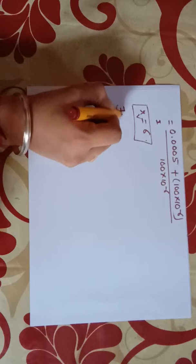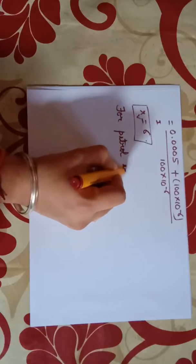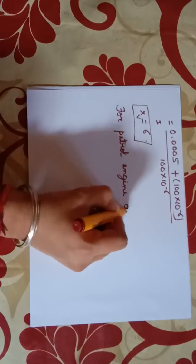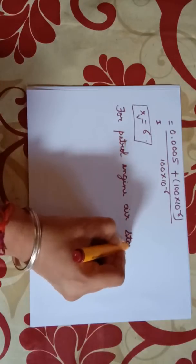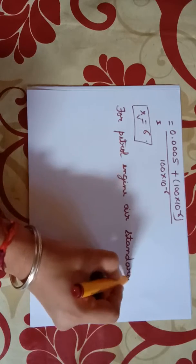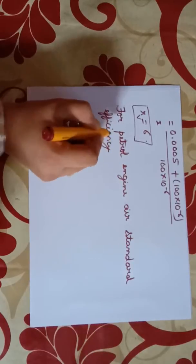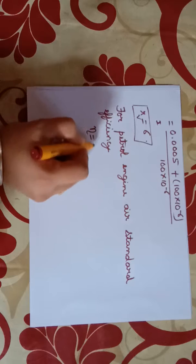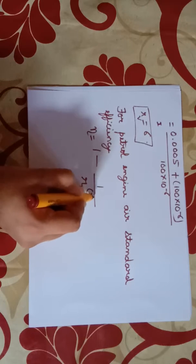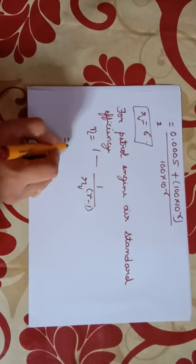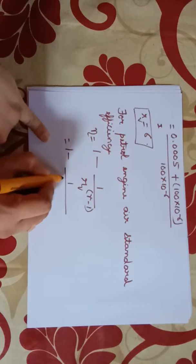Now for petrol engine, air standard efficiency is 1 minus 1 by r raised to gamma minus 1, that is 1 minus 1 by 6 raised to 1.4 minus 1.